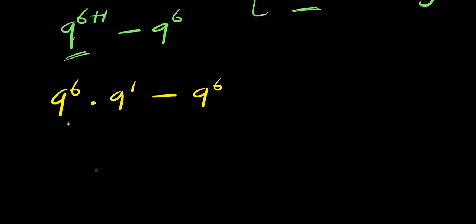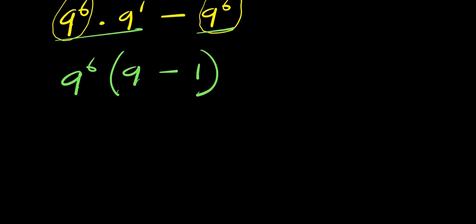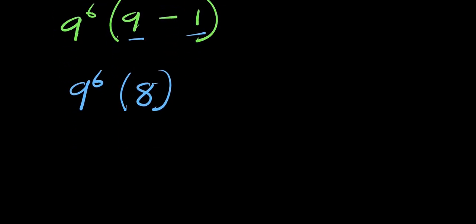Right now we have nine to the power six appearing in both terms, so we can factor that out. Factoring gives us nine to the power six, times the quantity nine minus one, which equals nine to the power six times eight.